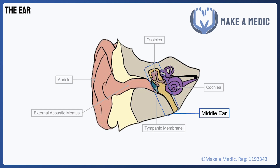The tympanic membrane, which is the eardrum, is what physically separates the outer ear from the middle ear. This membrane transmits sound from the air to the ossicles, which is a set of three tiny bones called the malleus, incus, and stapes, also known as the hammer, anvil, and stirrup.